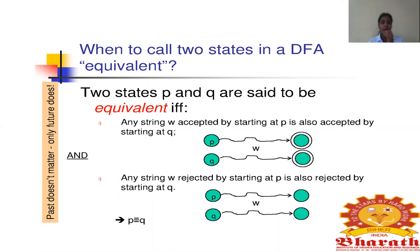We call two states to be equal only based on the string that is going to be accepted or rejected. We say that two states P and Q are equivalent only if any string W which is accepted by a DFS starting with state P is also accepted by a DFS starting with state Q. Similarly, if any string W is rejected starting at P and also rejected starting at Q, then both DFS starting with P and Q are equal.